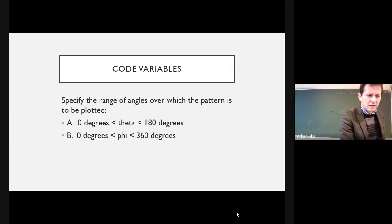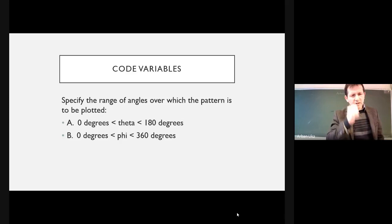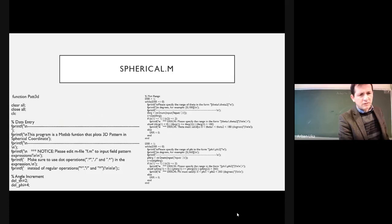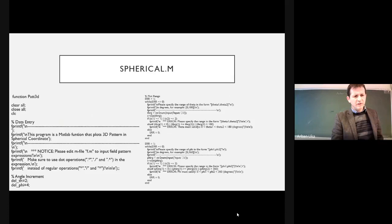The variables that we are generally going to change will be the angle theta, which is the angle measured with respect to the z-axis, and the angle phi, which is the angle on the xy-plane with respect to the x-axis. Theta can change from 0 to 180 and phi from 0 to 360. From the code you can change the angle increments for theta and phi.